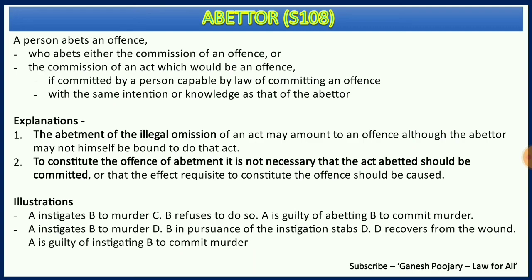In the second illustration, A instigates B to murder D, B agrees and stabs D, but fortunately D recovers. Even so, A is guilty of instigating B to commit murder. The punishment will be for abetment of murder — not merely hurt or grievous hurt — because that was the original intent. This is a very important aspect of subsection 2.